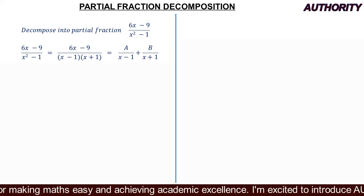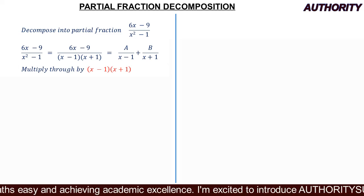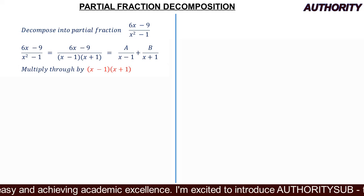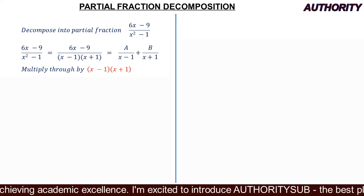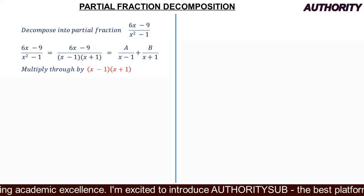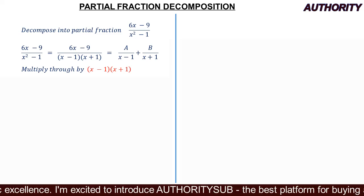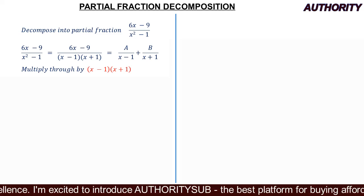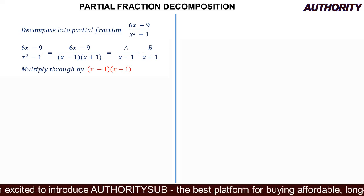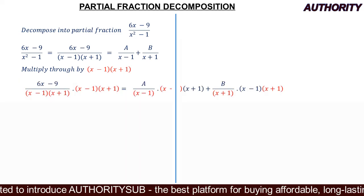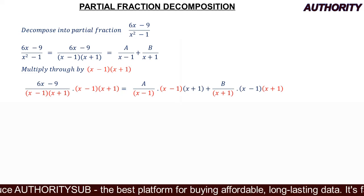The next step is to multiply everything through by (x - 1)(x + 1), so that we eliminate the fractions and get a linear expression in one line.